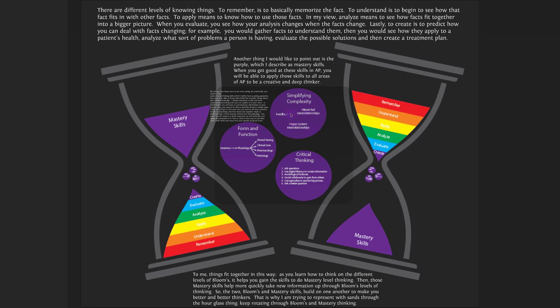I also highlight mastery skills in purple. Part of college is learning how to learn — once you do, the facts matter less because you've learned how to learn. As Einstein essentially said, why fill your mind with facts when your mind needs to be thinking? When you get good at basic skills in A&P — like how to look up a disease or what structures are necessary for a body function — you can apply those mastery skills to all areas of A&P to become a creative and deep thinker.